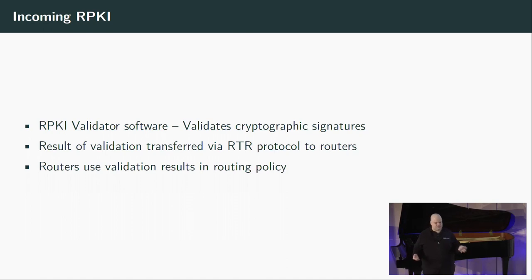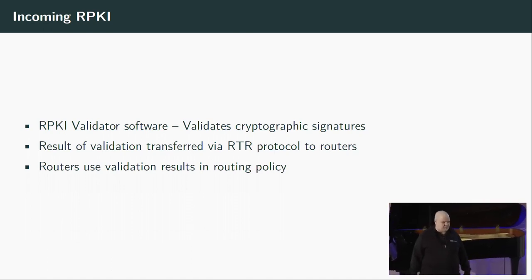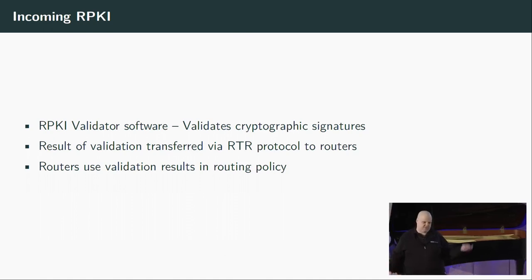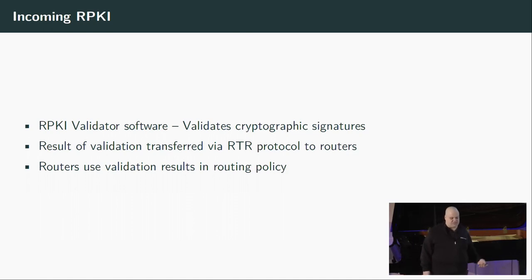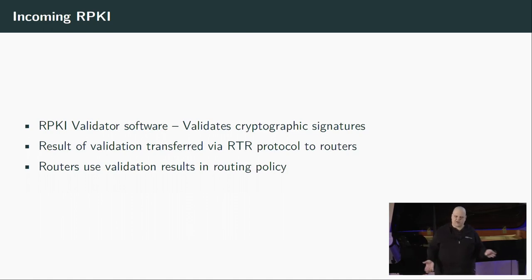For that to happen, you need a few more building blocks. First, you need an RPKI validator software. The software will validate the signatures on the ROAs — the route authorization objects. That is done separately offline from your router, which is a good thing, because most routers don't have the CPU for that. After that, the result of that validation is transferred via a special protocol to the router — in the past mostly done via plain text, but nowadays you can also switch it to encrypted transmission.